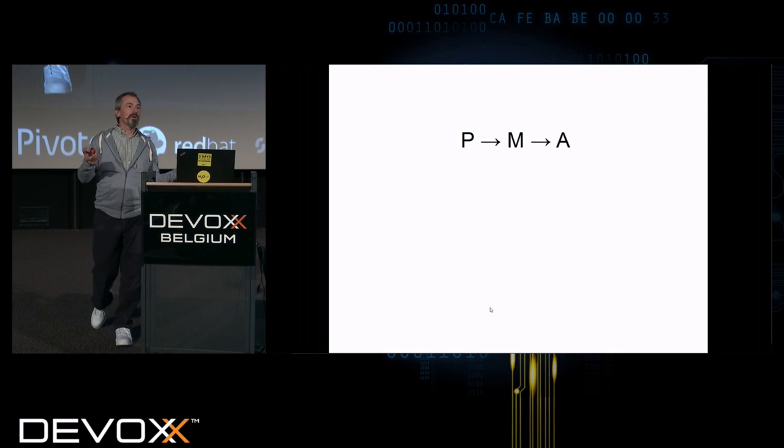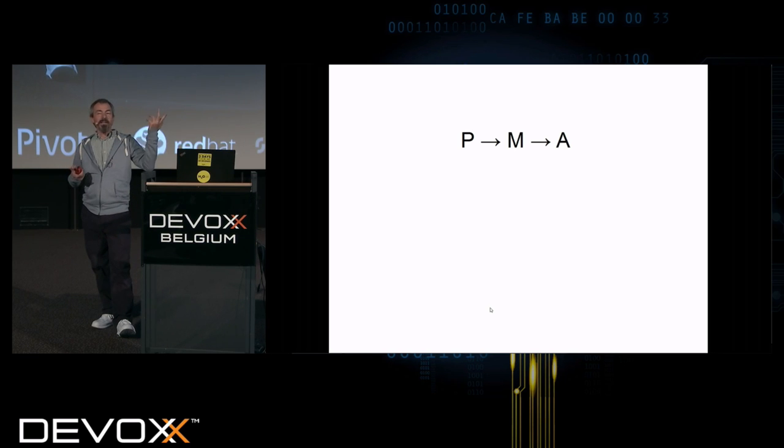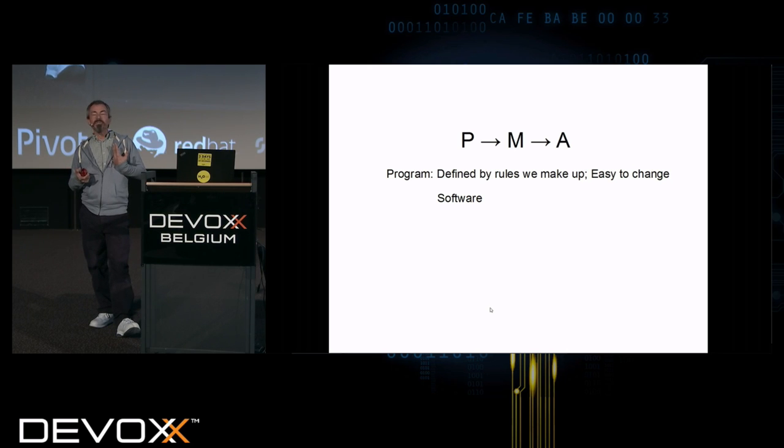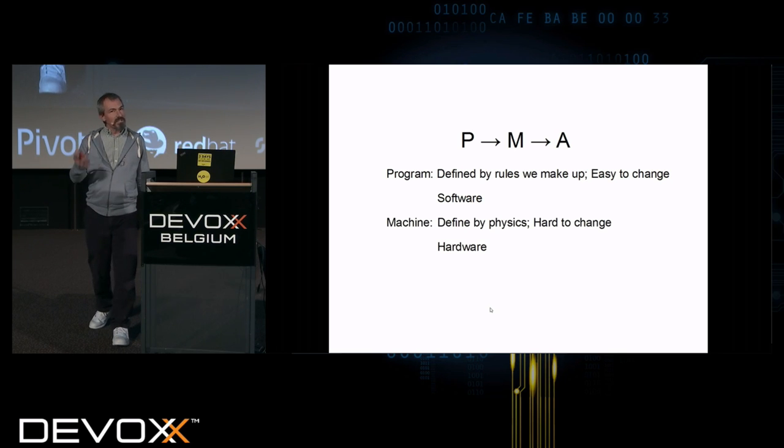In this model of the world, there's a machine in the middle as the actor. He's going to take a set of instructions, a recipe for getting something done, and change the physical world and give me the answer I want out. The program is defined by rules that we make up, therefore it's easy to change, and we call that software. Whereas the machine is defined by the laws of physics, it's hard to change, and we call it hardware.